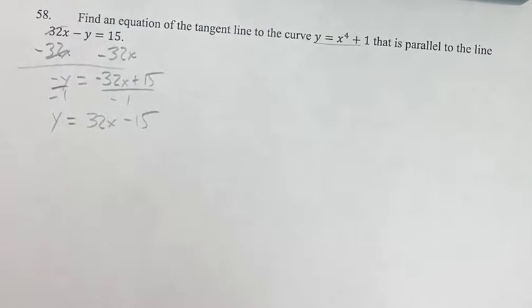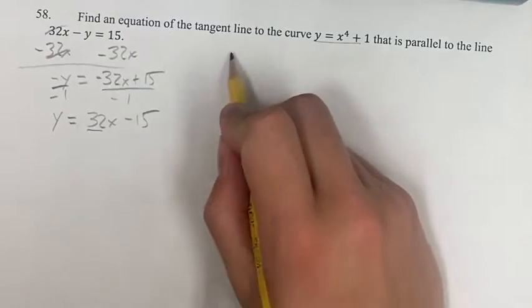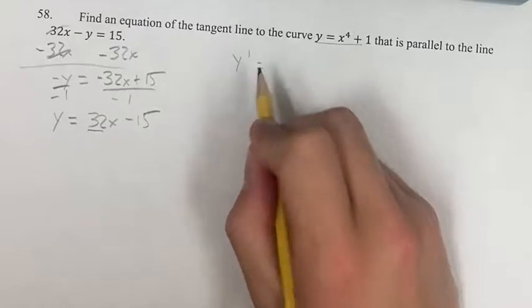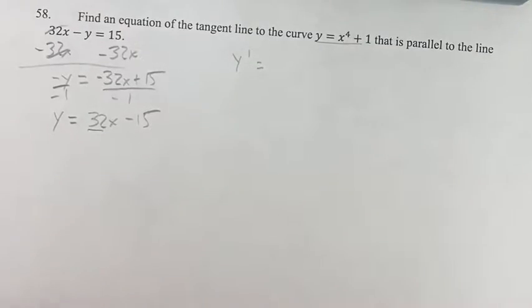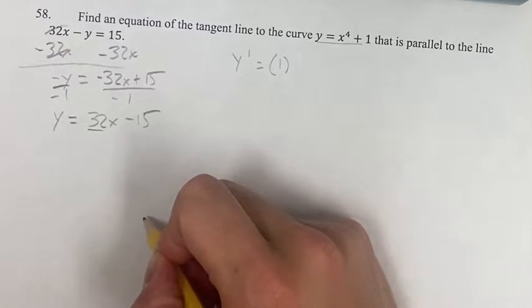So we want to find the equation of the tangent line to this curve that has a slope of 32. So first, let's find the derivative, since that's going to give us the slope of the tangent line. So y prime, our derivative, is going to be, with this power function here, take the coefficient. Since there's 1x to the 4th, the coefficient is 1, even if it's not written.